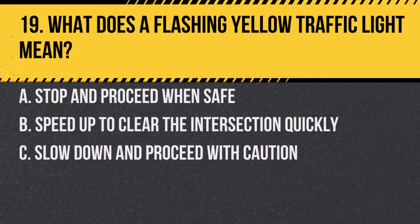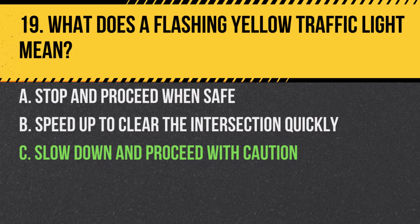Question 19. What does a flashing yellow traffic light mean? a. Stop and proceed when safe. b. Speed up to clear the intersection quickly. c. Slow down and proceed with caution. Answer: c. Slow down and proceed with caution. A flashing yellow light indicates to be alert and cautious while crossing the intersection.